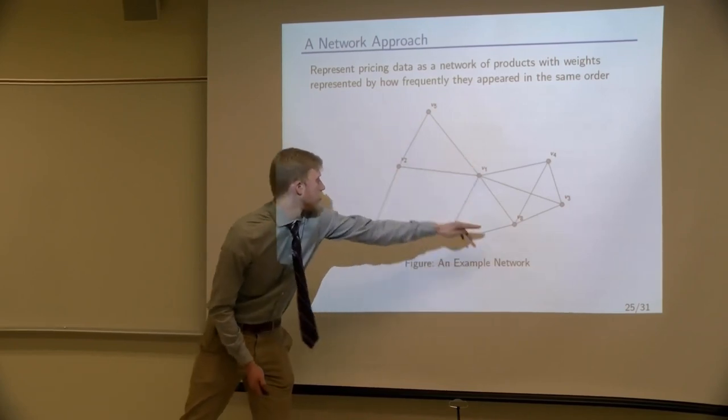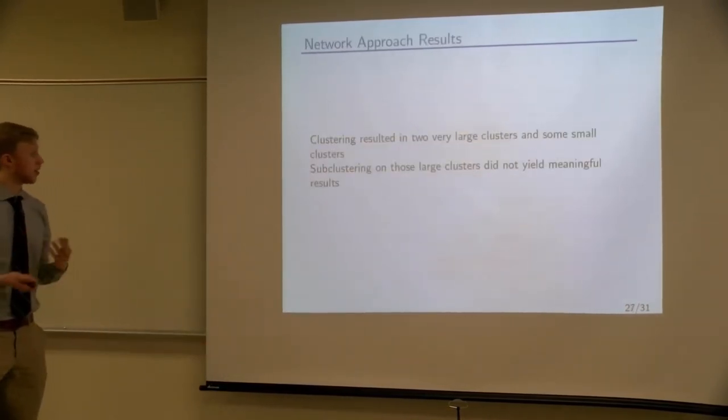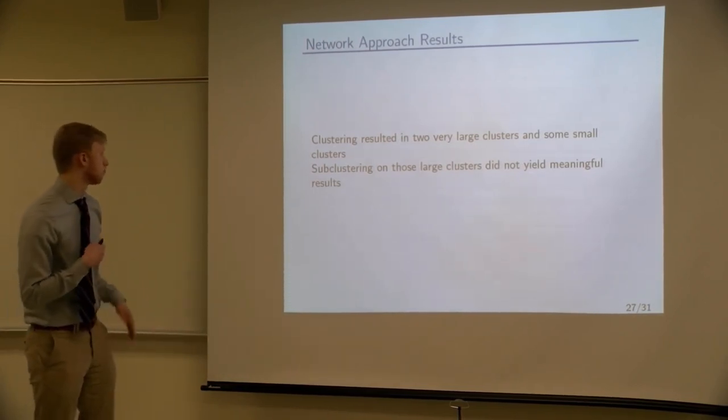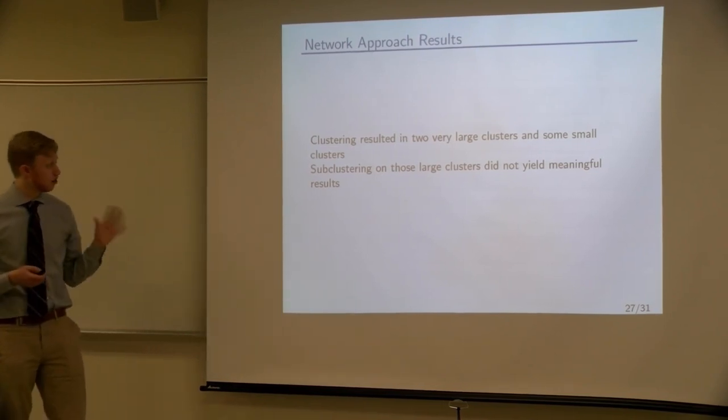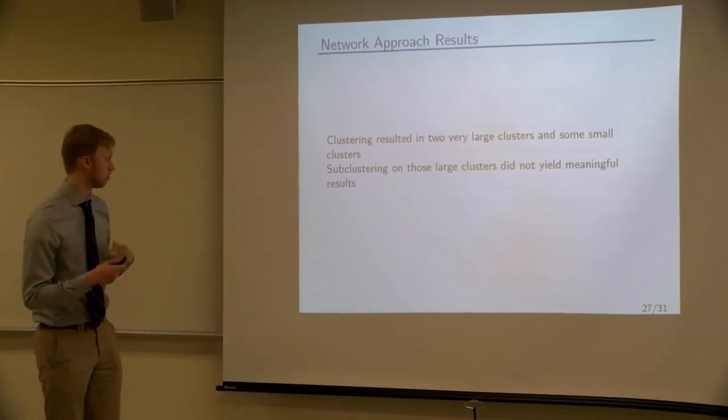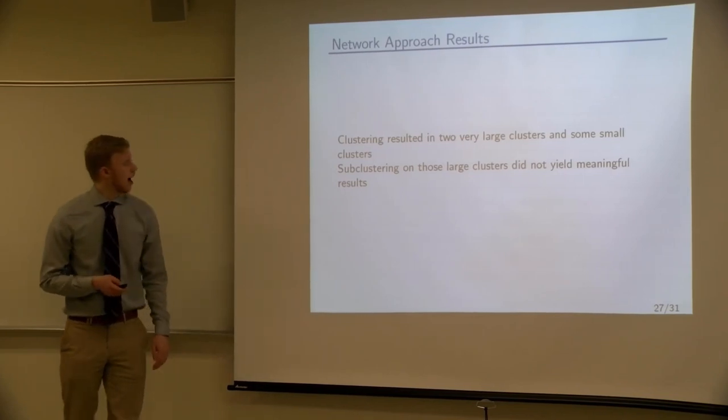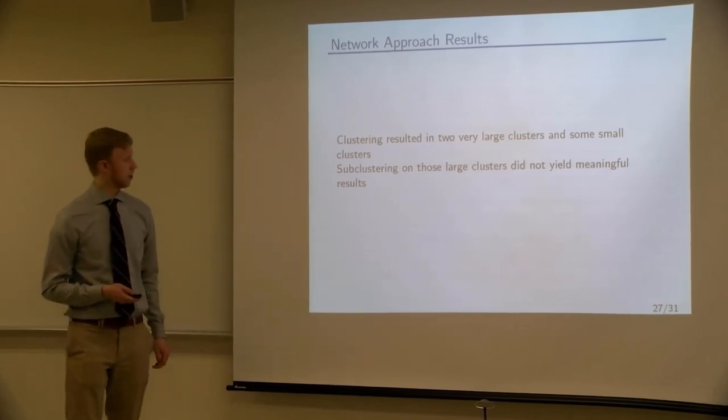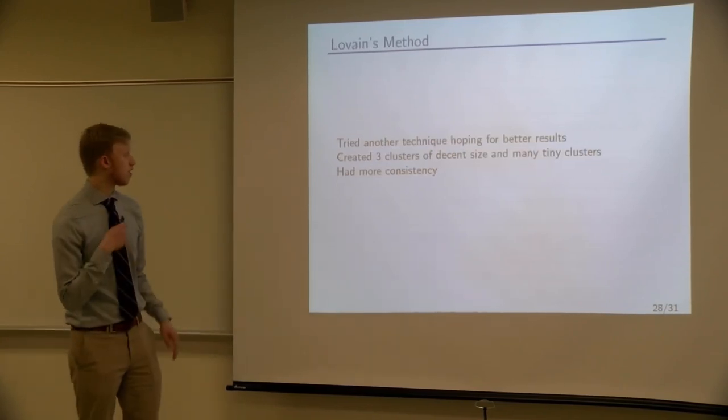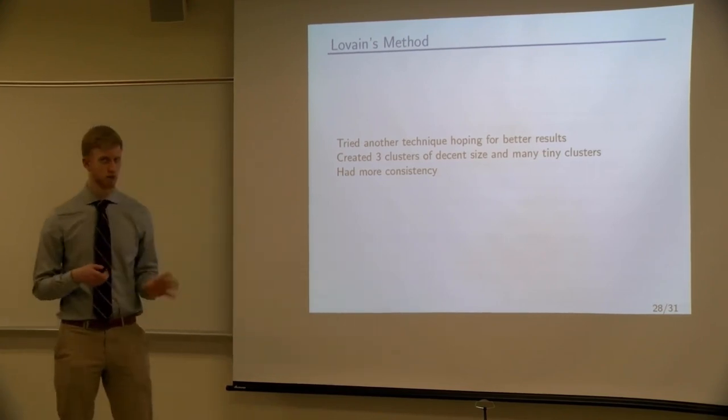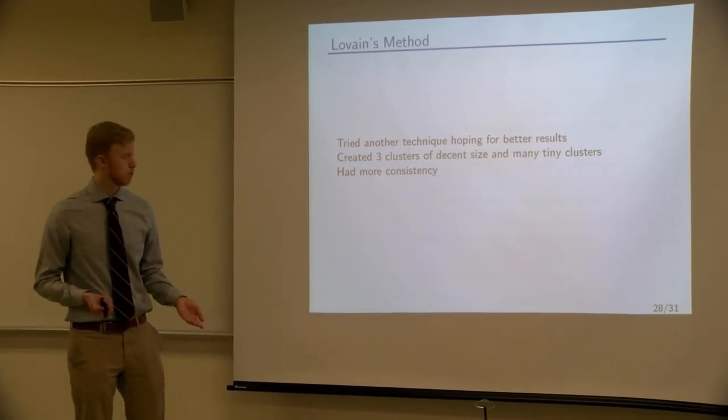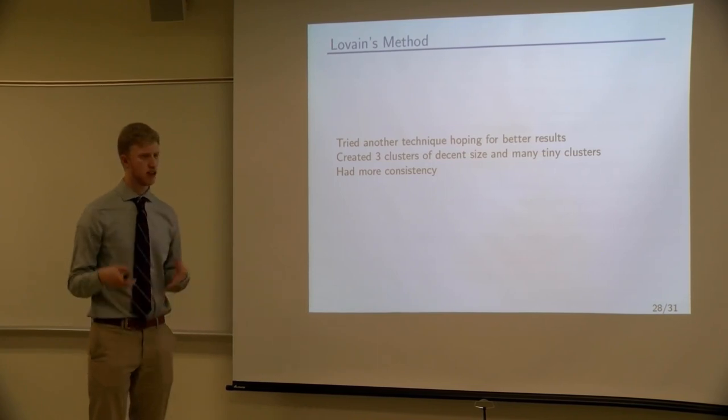Clustering, so I used two kinds of clustering. Spectral clustering and Louvain's method. Spectral clustering did it in two very large clusters and some small clusters. But it often worked in just one and that was kind of not as ideal. And subclustering on those large clusters didn't really yield anything meaningful. So I tried Louvain's method for hoping for something better. And that created three clusters of decent size and around like 13 tiny one with only one. But it did that with more consistency, which is what I really liked about that. So I preferred Louvain's method's clustering afterwards.